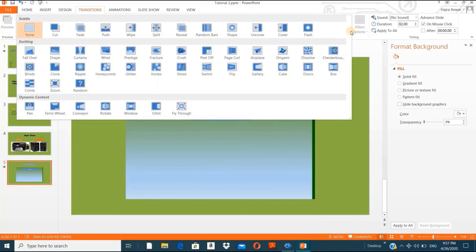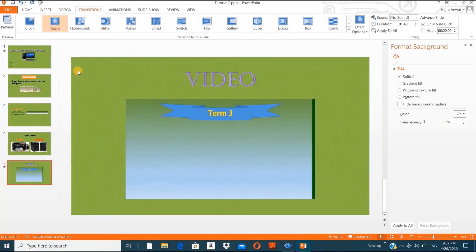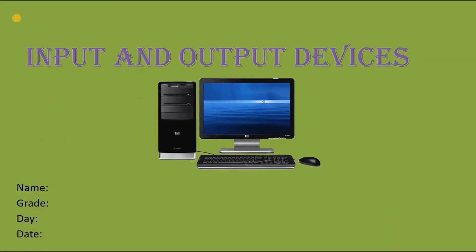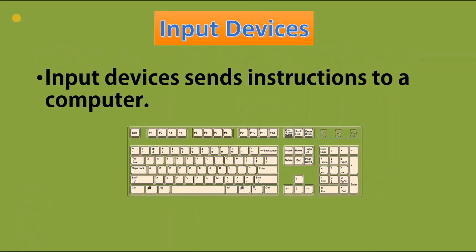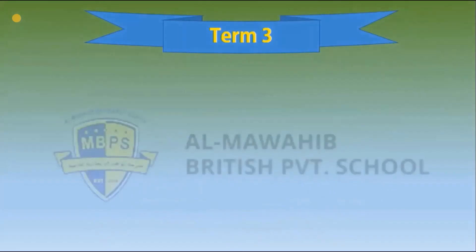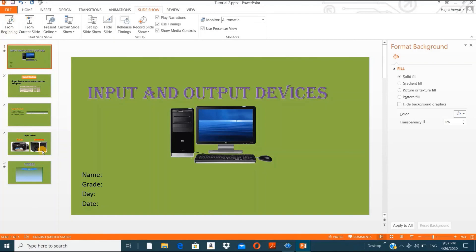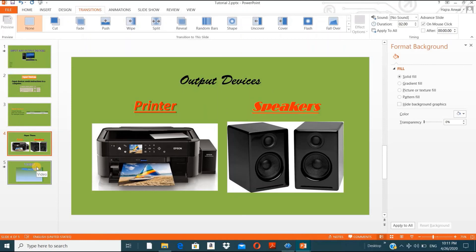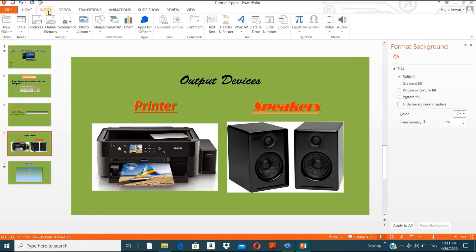Now let's look at Transitions. In the Transitions tab you have many options — you can choose any transition you want. A transition is the effect shown when the slide changes. For example, I'll select 'Ripple'. Go to the first slide, click Slide Show from the beginning, and press the arrow to move forward. In the next ICT practical session we will discuss transitions in detail and apply them to all slides.